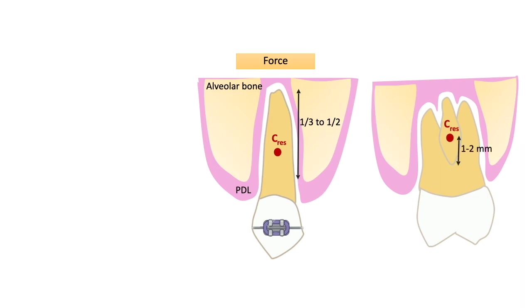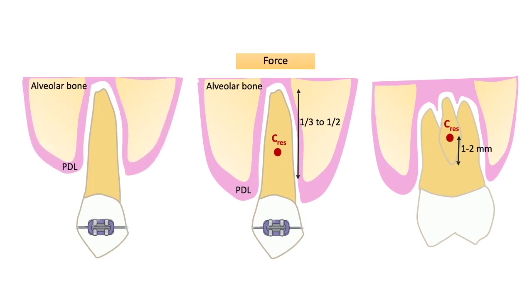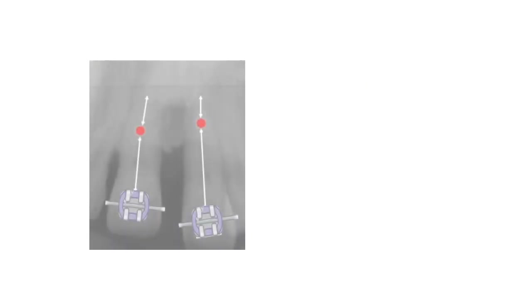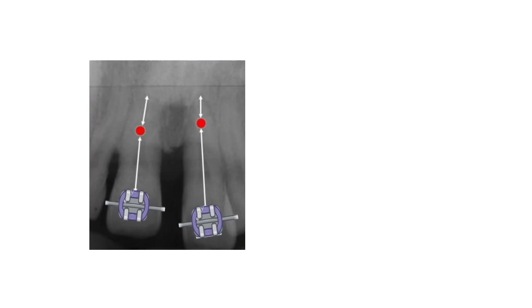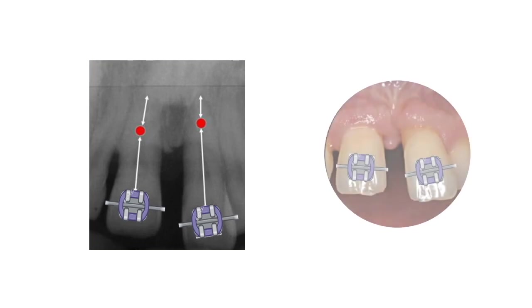The center of resistance shifts apically with alveolar bone loss and loss of periodontal support. It is approximately 10 millimeters apical to the level of placement of an orthodontic bracket. The center of resistance is located more apically for a periodontally compromised tooth with loss of attachment, because of the difference in bone height, as you can see in the clinical image.